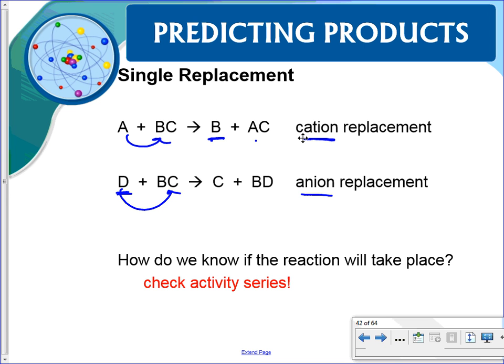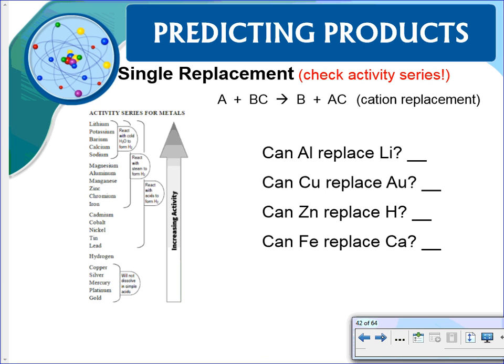Just because we put an element in a solution, or just because we put an element and compound together, does not mean it's going to react. We need to check the activity series. The activity series is a list of the reactivity of elements, determined through experiments to see which is the most reactive.